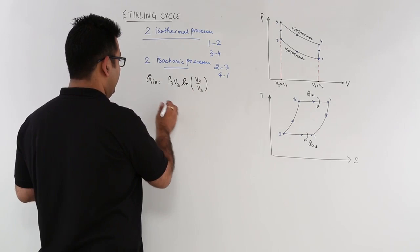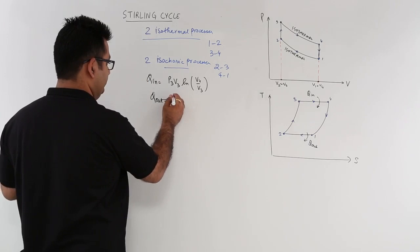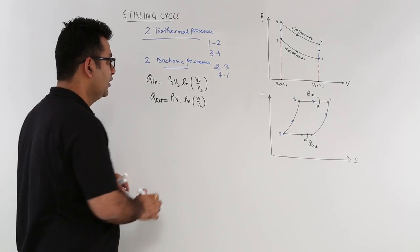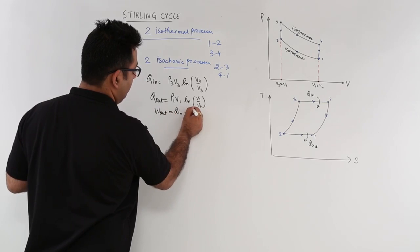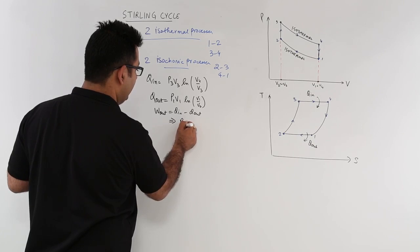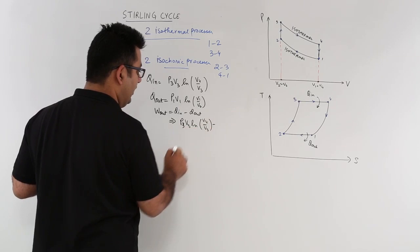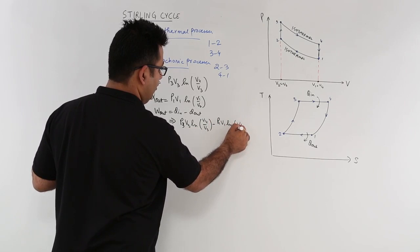And if you talk about Q out, that is for process 1 to 2, P1 V1 natural log V1 by V2. So the net work output is Q in minus Q out. So that is P3 V3 into log V4 by V3 minus P1 into V1 into log V1 by V2.